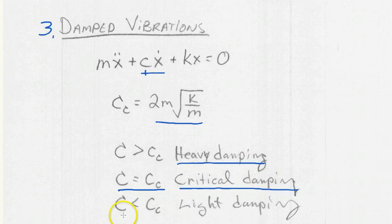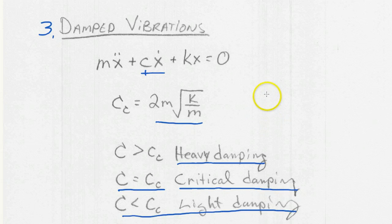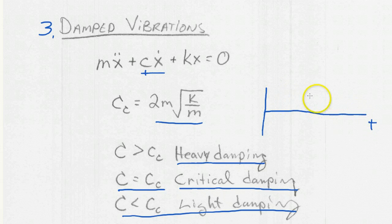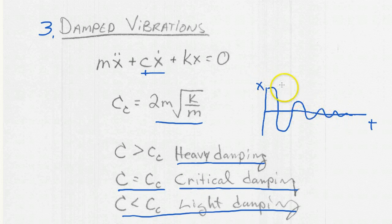And then the third case is light damping. Light damping has some friction in the system, and if we drew out a system where we have time and displacement, we would see light damping would look something like this, where the amplitude is constantly getting smaller and smaller, but there's still oscillations. So those are the three types of damped vibrations.